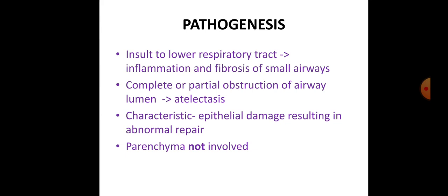Regarding pathogenesis, bronchiolitis obliterans occurs as a result of an insult to the lower respiratory tract, which leads to inflammation and fibrosis of the smaller airways. Sometimes there is complete or partial obstruction of the airway lumen, leading to atelectasis. The characteristic feature is epithelial damage resulting in abnormal repair; the parenchyma is not involved in bronchiolitis obliterans.